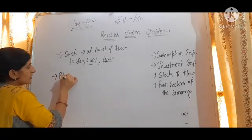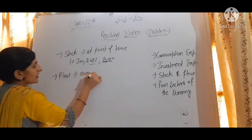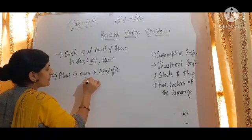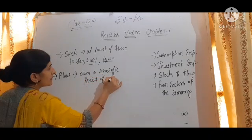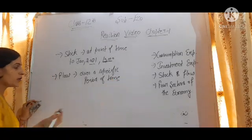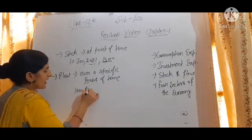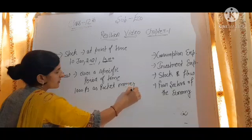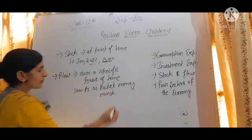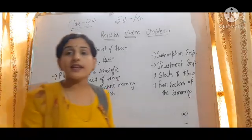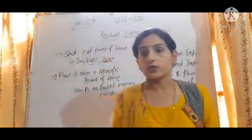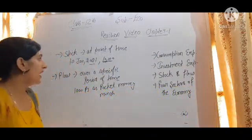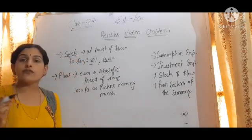Flow is measured over a specific period of time. For example, you are getting 1,000 rupees as pocket money per month, and you spend 50 or 20 rupees per day in the canteen — that is the flow concept. So flow is measured over a specific period of time, and stock is measured at a point of time.